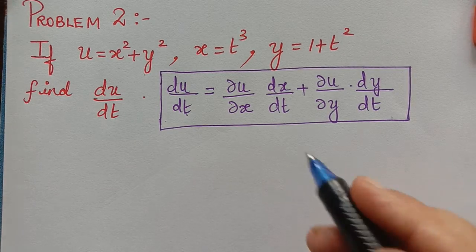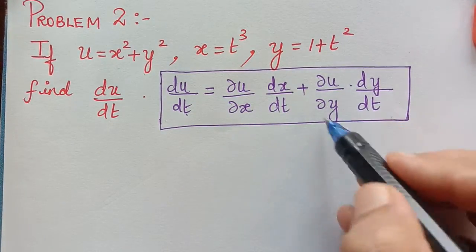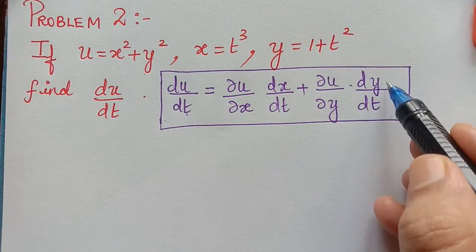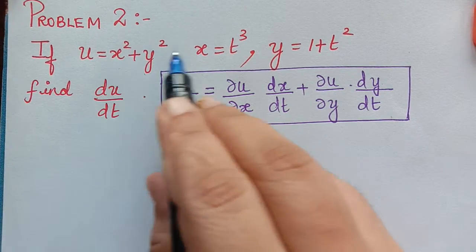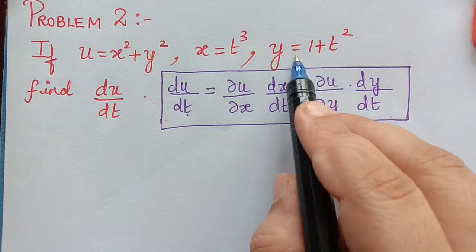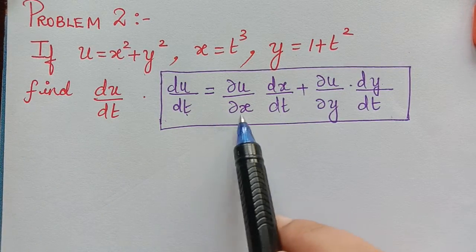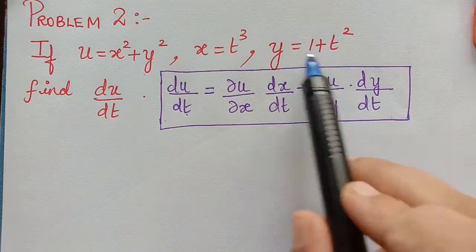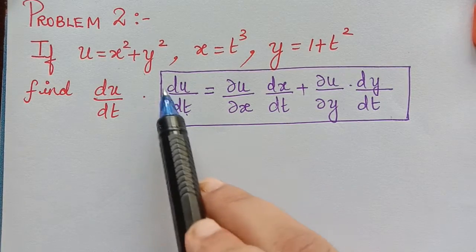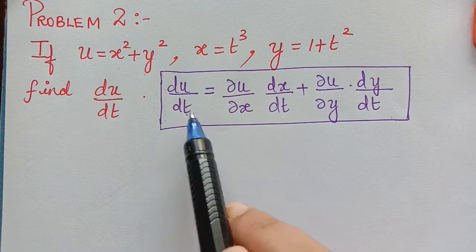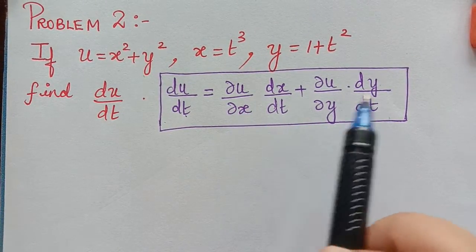Now we have to find each one of these separately by using the given u, x, and y, and then substitute them one by one into this formula to find du by dt.